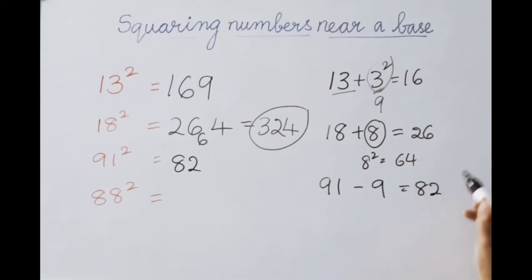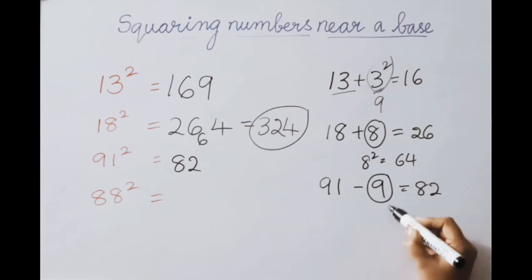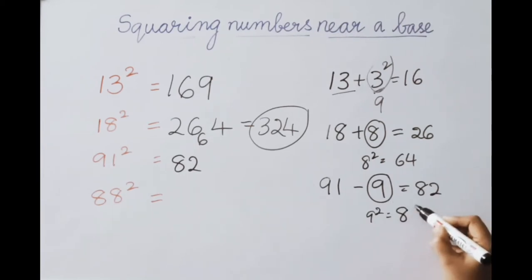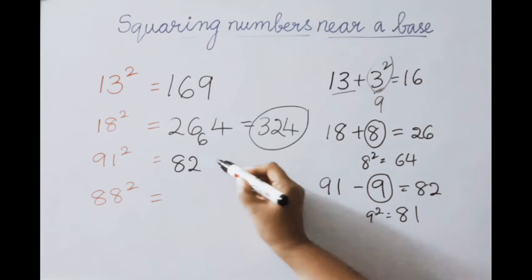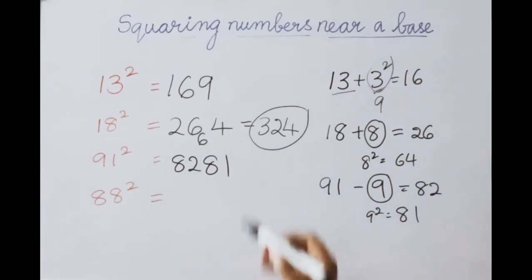Now for the second part, square the deficient value: 9 squared equals 81. Write down 81. So 91 squared equals 8281.